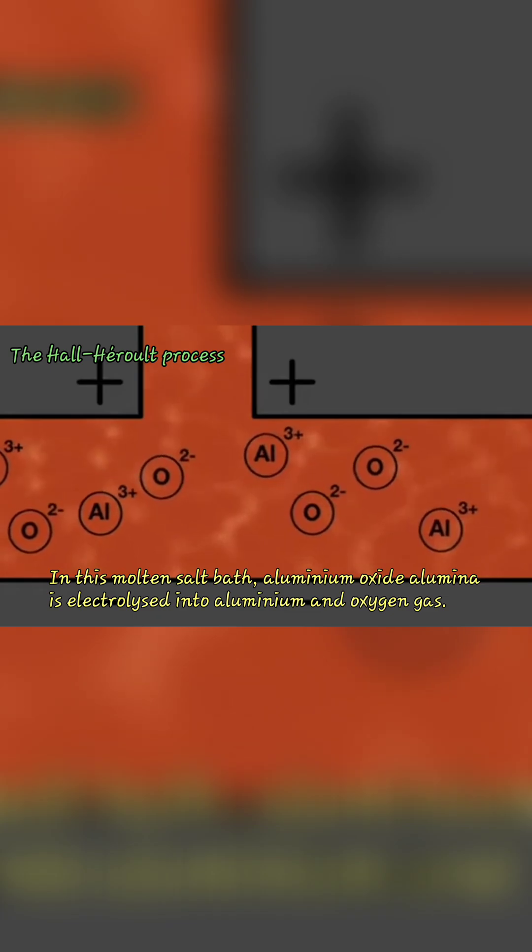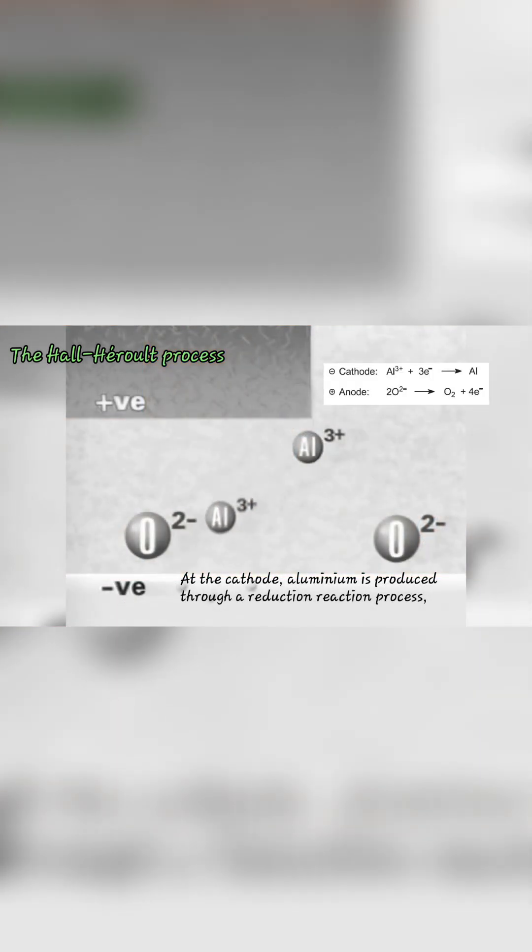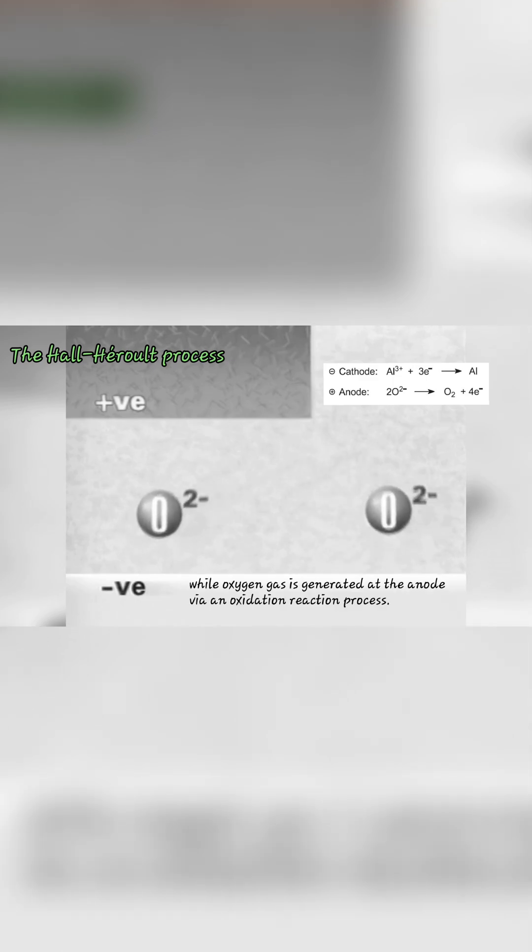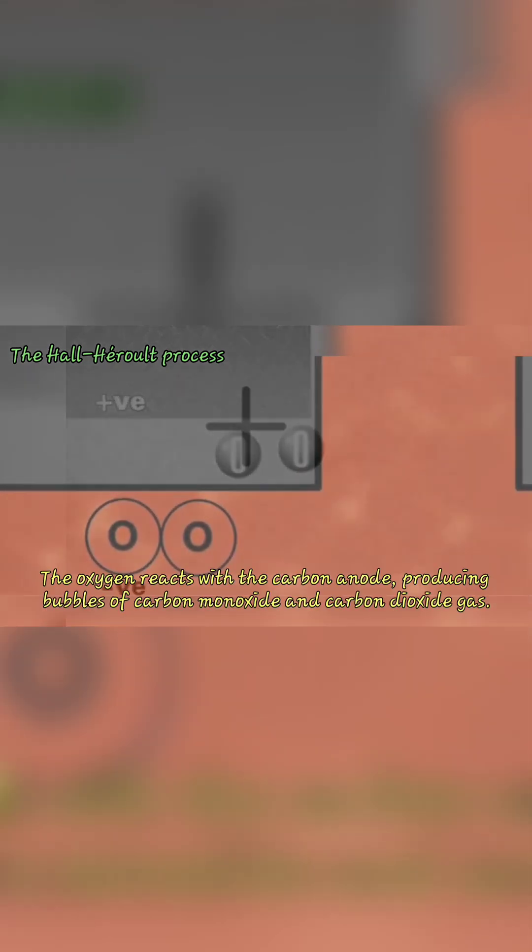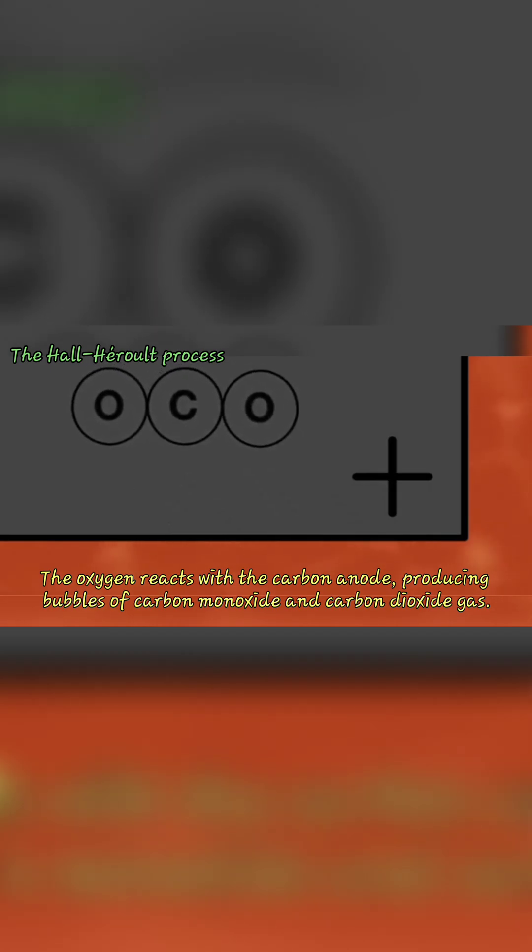At the cathode, aluminium is produced through a reduction reaction process, while oxygen gas is generated at the anode via an oxidation reaction process. The oxygen reacts with the carbon anode, producing bubbles of carbon monoxide and carbon dioxide gas.